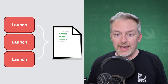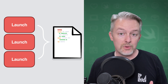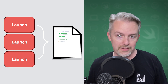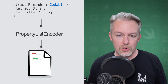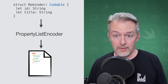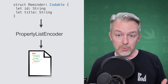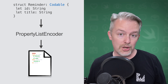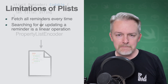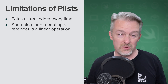One way you could handle this is to write the instances of this type to a file on disk when you call the save method. You could have the type adopt the Codable protocol, and whenever you want to save, you could use a property list encoder to encode the data as a plist. Unfortunately, this approach would only take you so far.